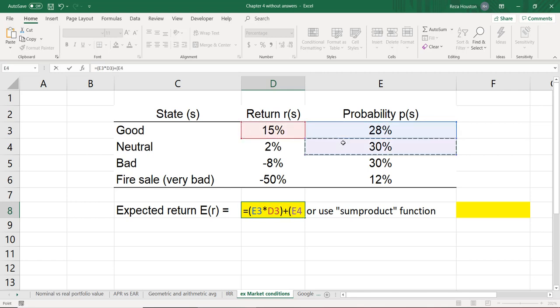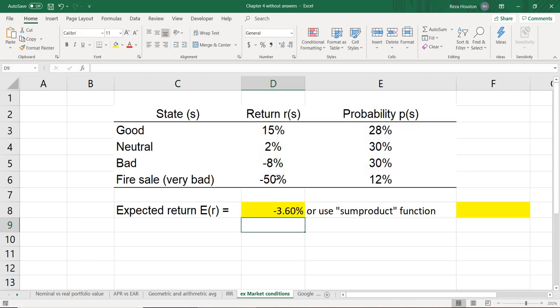add to that the probability of the second state occurring, and multiply that by the return, and then do the same for the last two states. And so our expected return in this case is negative 3.6%.